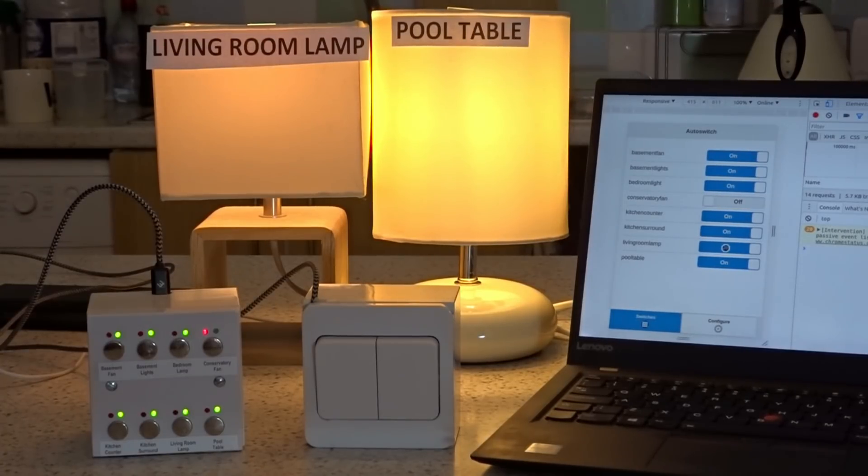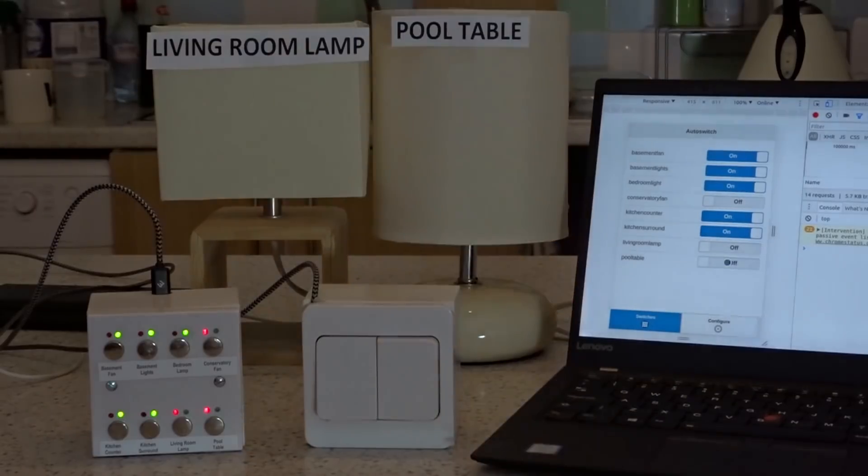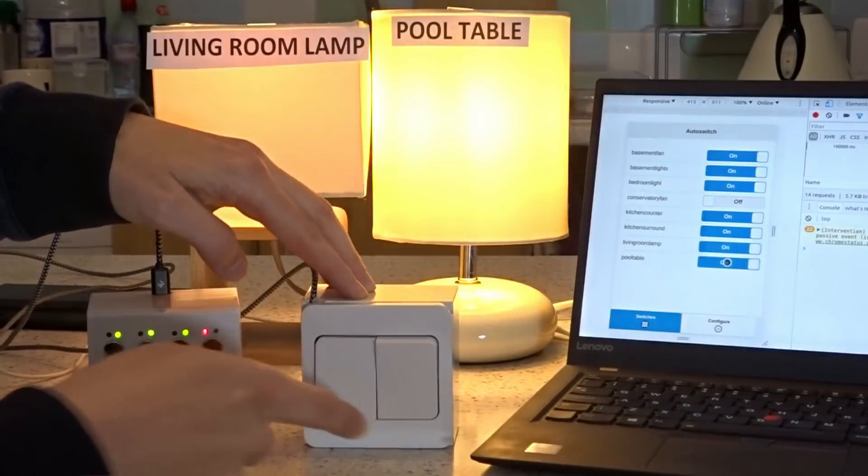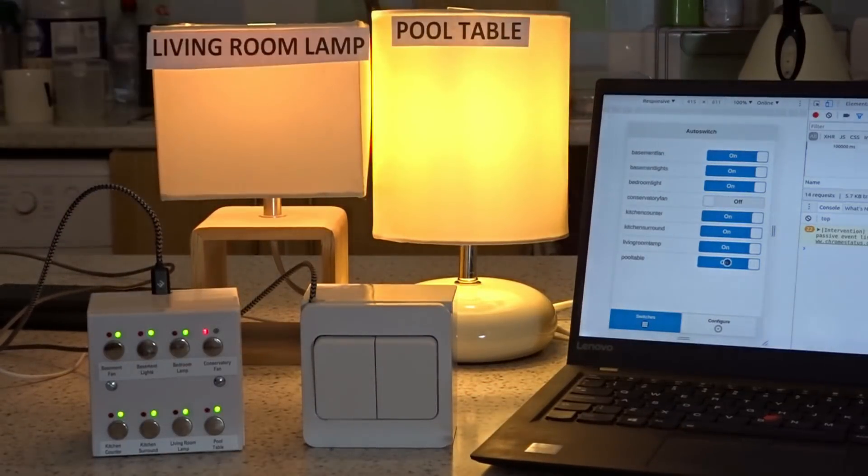If I turn both devices off, so living room lamp and pool table, you can see the other lamp, the other switch goes off and I can turn it on here. You can see it's reflected in real time on the mobile app as well.